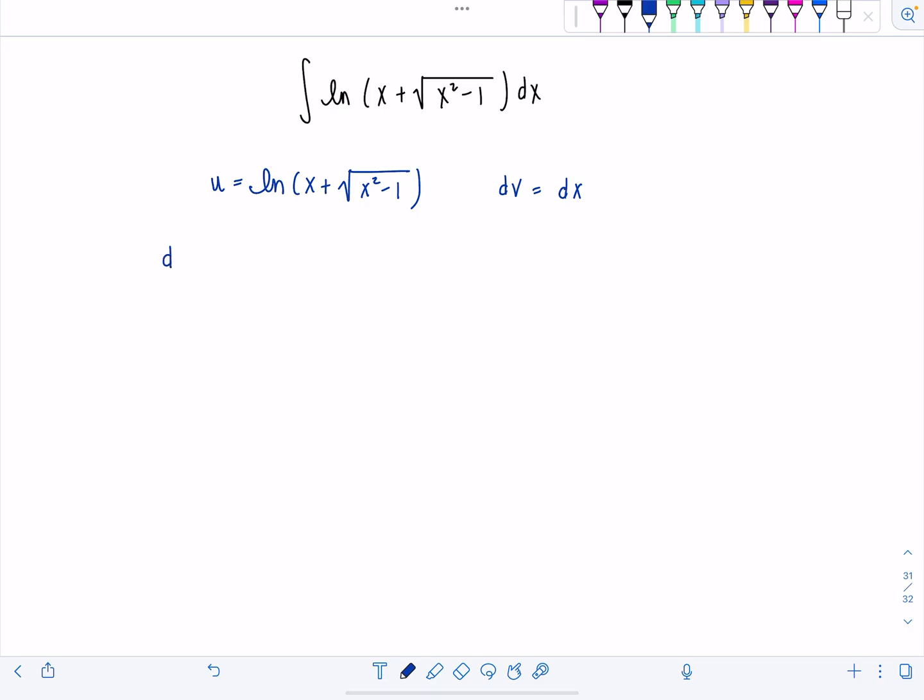So du, let's take the derivative. Derivative of natural log of something is 1 over the something. In this case, 1 over x plus square root of x squared minus 1. And then we do have to use the chain rule and multiply by the derivative of x plus rad x squared minus 1. So derivative of x is 1. Derivative of square root of x squared minus 1 is going to be 2x over 2 rad x squared minus 1.